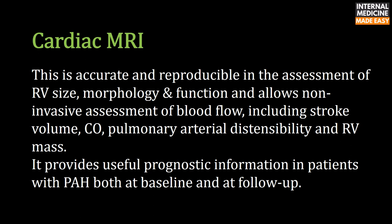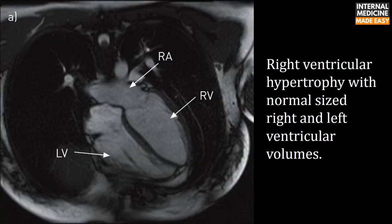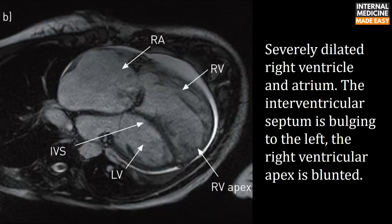Cardiac MRI is accurate and reproducible in assessing right ventricular size, morphology, and function, and allows non-invasive assessment of blood flow including stroke volume, cardiac output, pulmonary arterial distensibility, and right ventricular mass. It provides useful prognostic information at baseline and follow-up. Two MRI examples are shown: one demonstrating right ventricular hypertrophy with normal-sized ventricular volumes, and another showing a severely dilated right ventricle and atrium with the interventricular septum bulging to the left and a blunted right ventricular apex.